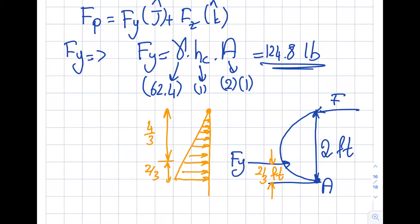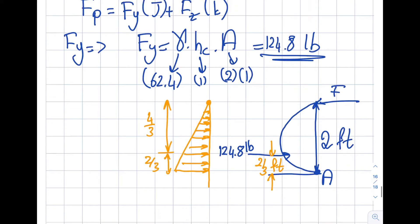So Fy = 124.8 pounds, acting at 4/3 feet from the free surface. Let me update the figure with this value. Now the next question — finding Fz — is a bit more involved.